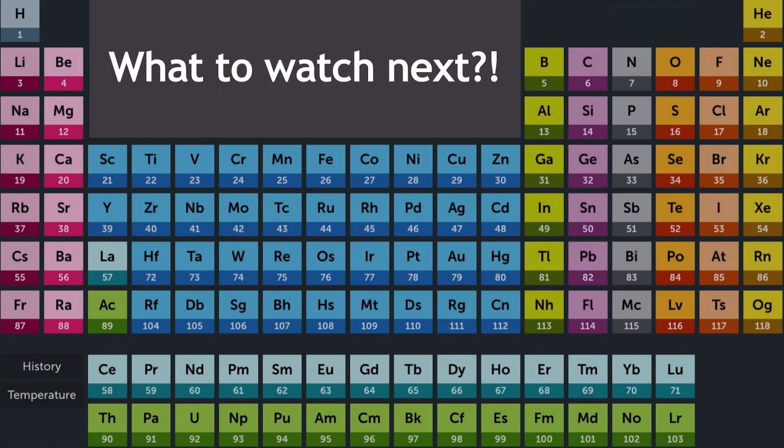That takes you through a tour of the periodicity topic. I'd recommend watching the video on group 2 chemistry next, before moving on to the group 7 halogens topic, as these are very often overlooked. I want to make sure you see them as individual topics to give you the best chance in the summer exam. Happy revising!